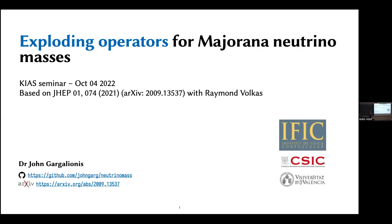In this project, we automated and systematized the process of building UV complete models, starting from effective operators. We targeted this machinery at the problem of looking for UV completions of operators in the standard model effective field theory that violate lepton number by two units, as an initial example. Those UV completions inevitably generate a Majorana neutrino mass. So this code, published at a GitHub reference, is a kind of factory for building models of neutrino mass.